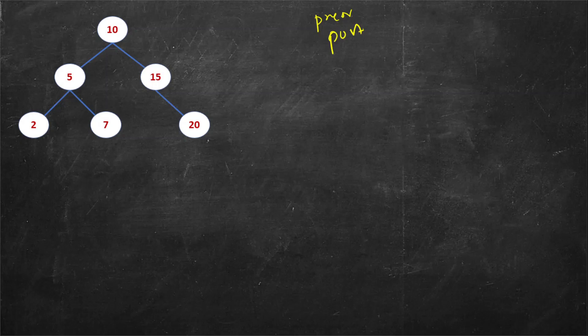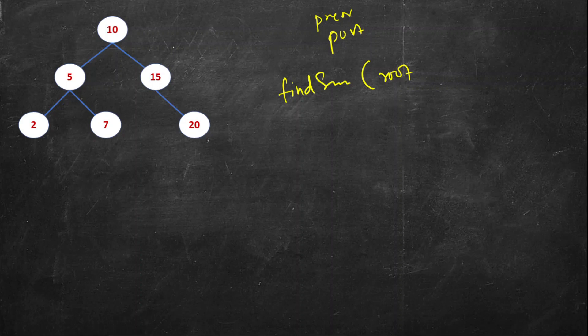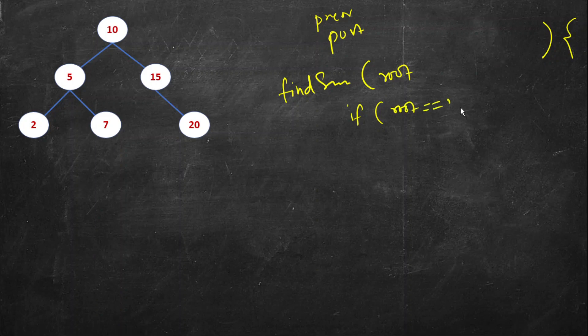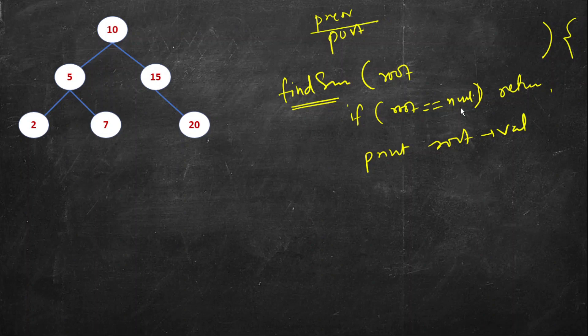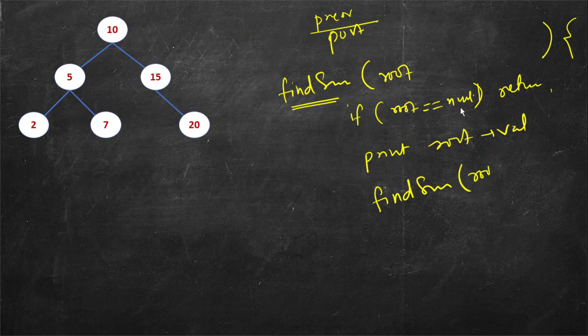Let's say our function is find sum and we are given root. In traversal we are just given root, so first let's complete traversal. What we do: if root is null then we return. Then we visit, we can print root val. I am doing pre-order, you can do any other traversal as well. Then we do the same function find sum root left.